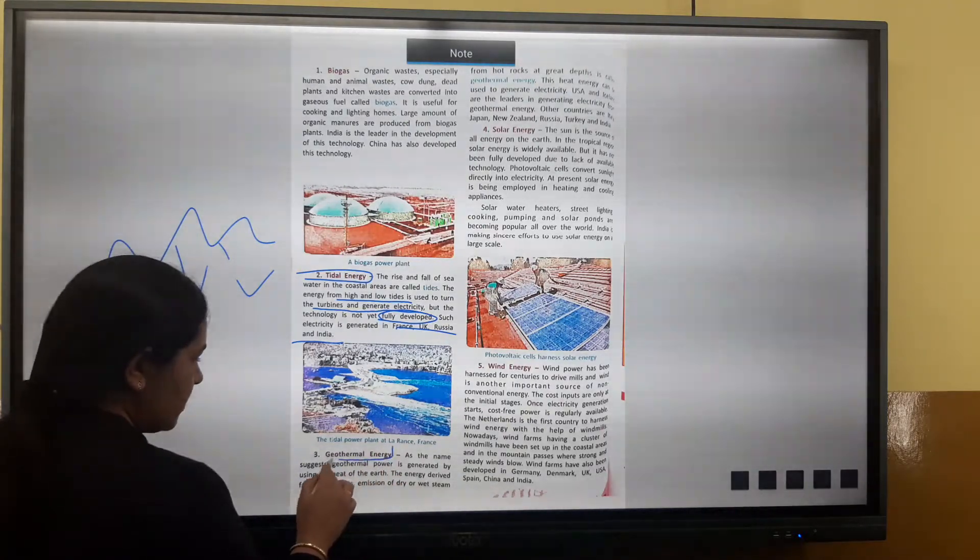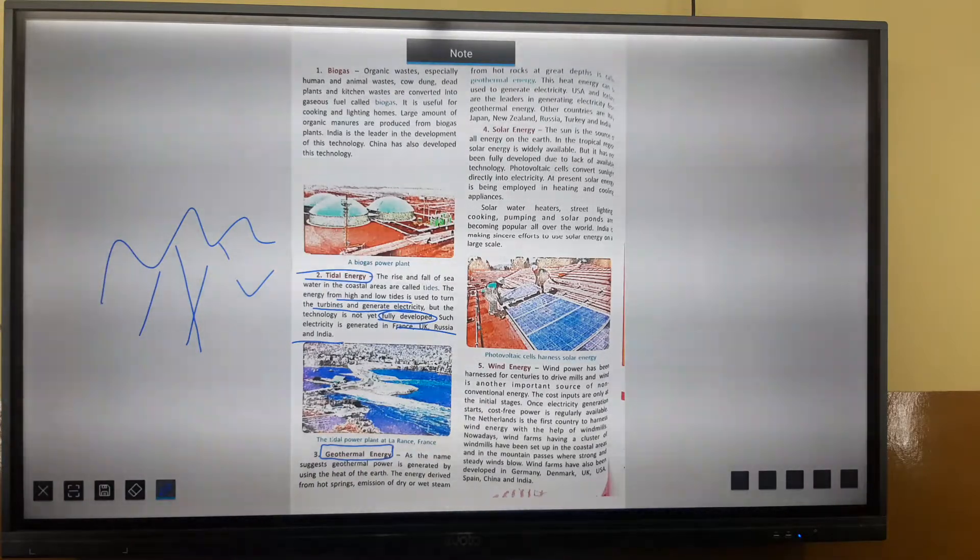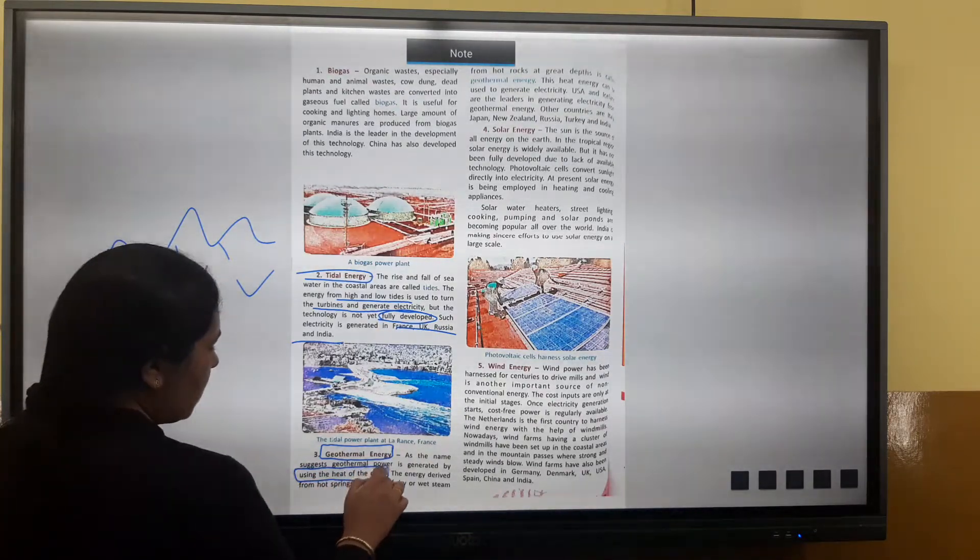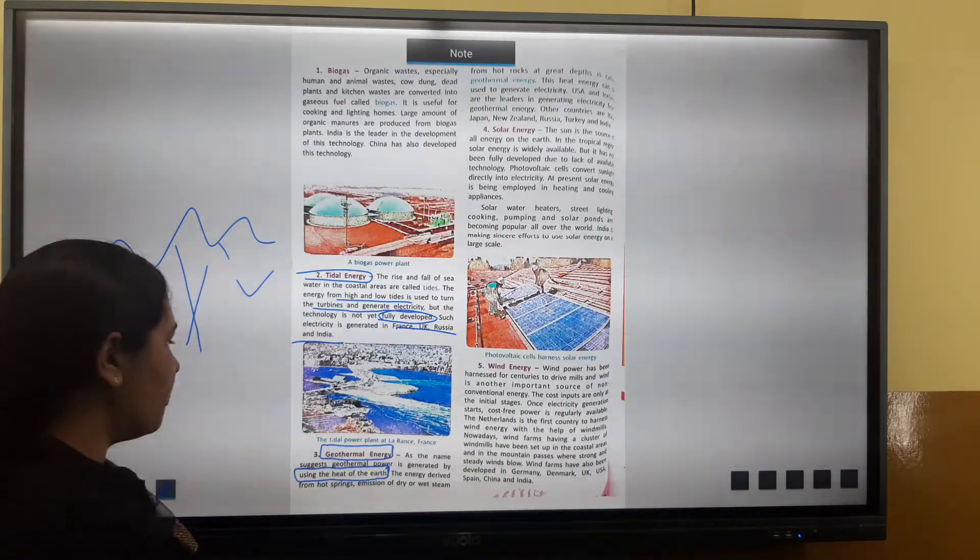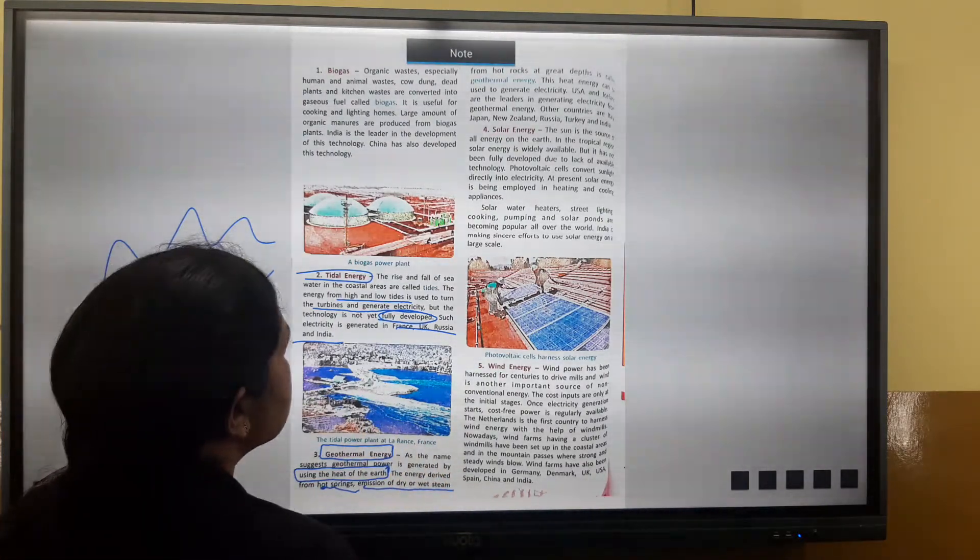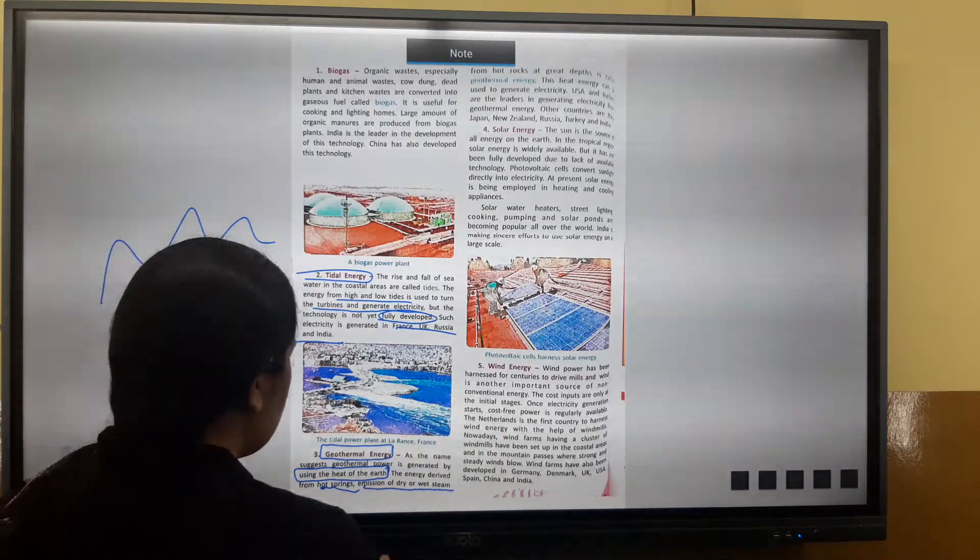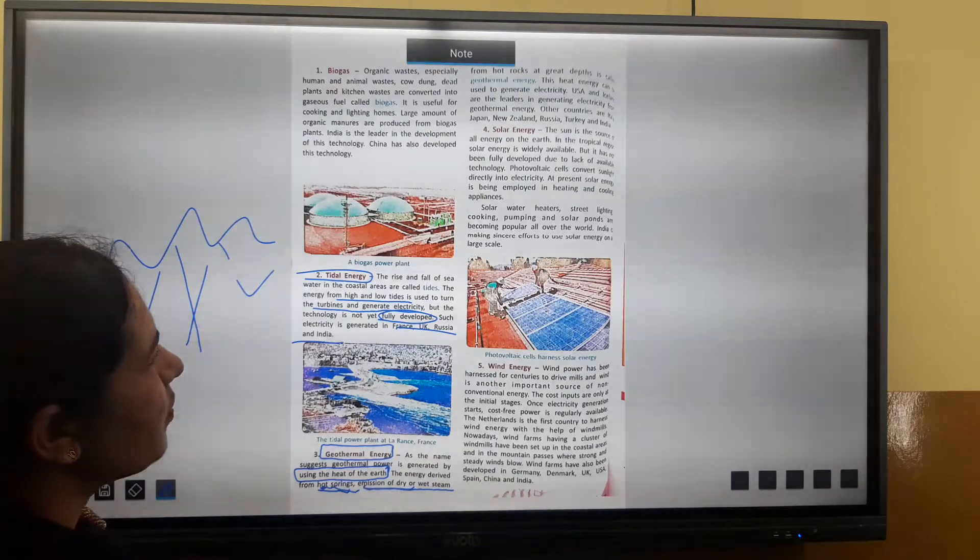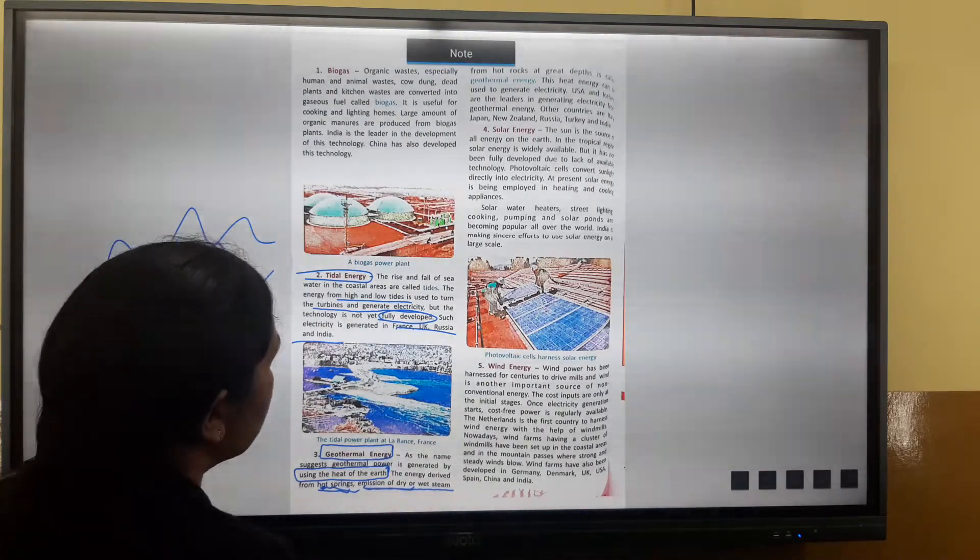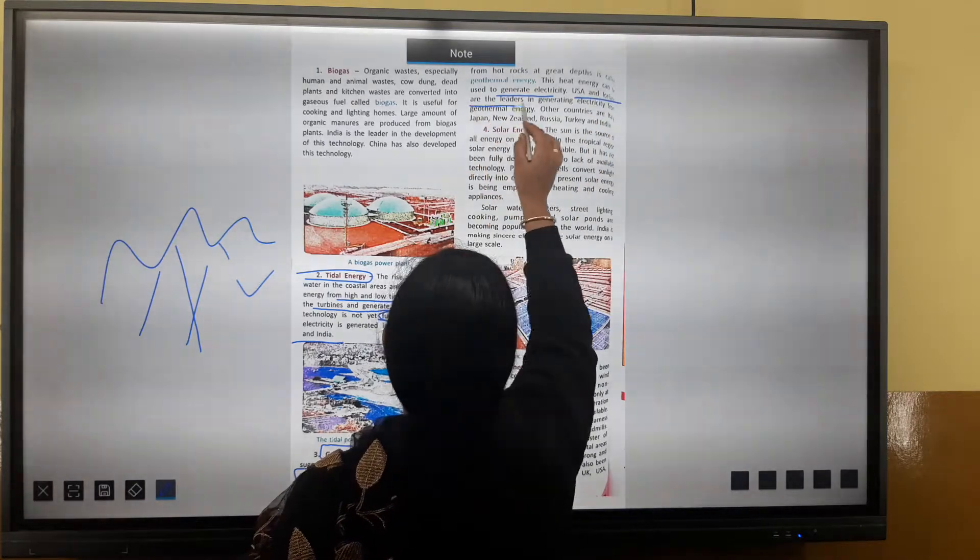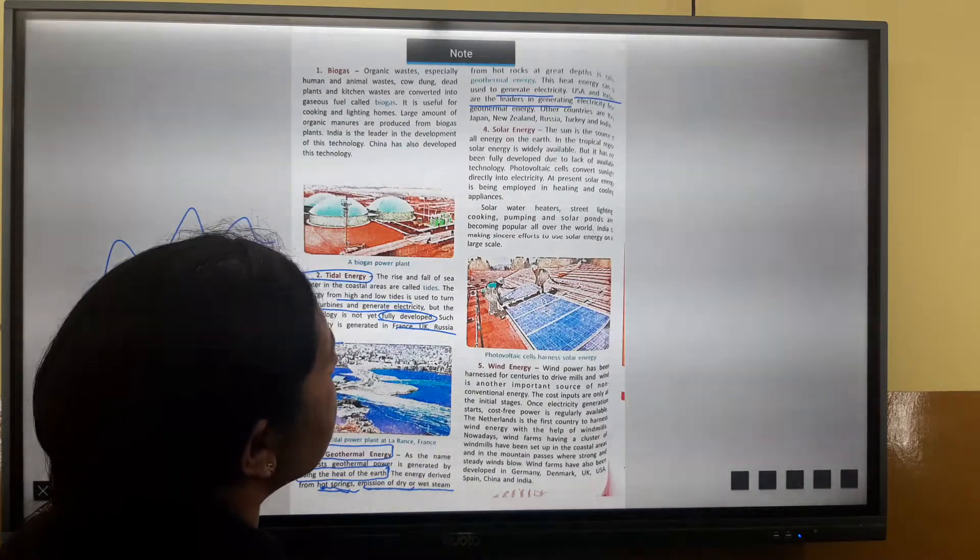Next is geothermal energy. As the name suggests, geothermal power is generated by using the heat of the earth. The energy derived from hot springs, emission of dry bed streams from hot rocks at great depths is called geothermal energy.